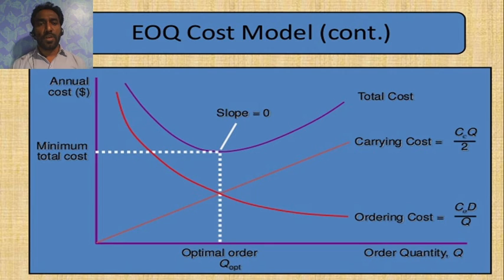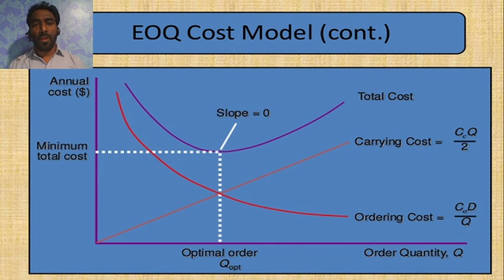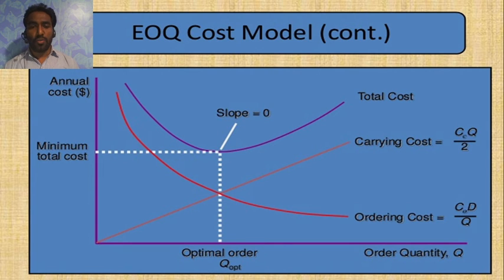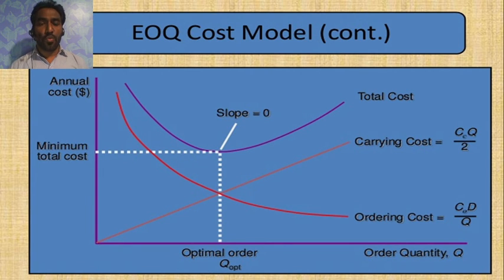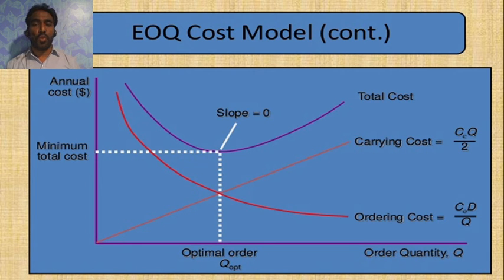The graph shows annual cost, minimum total cost, carrying cost, and ordering cost. The point where the slope equals zero is our EOQ — this is the optimal order quantity that minimizes total cost.